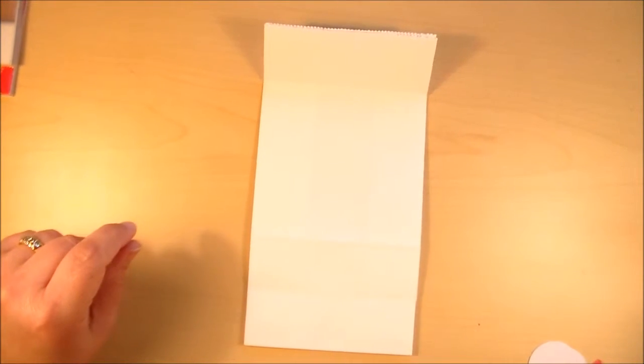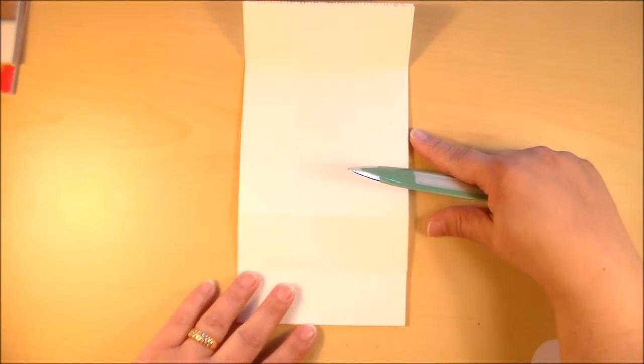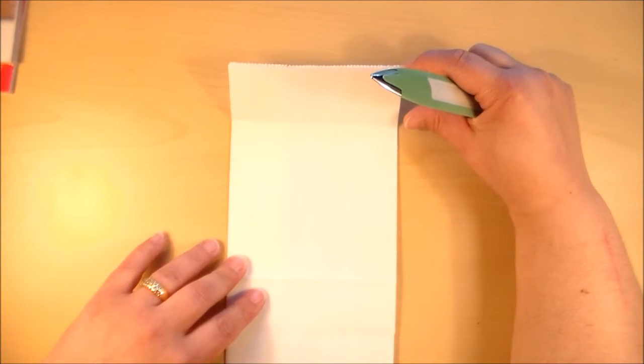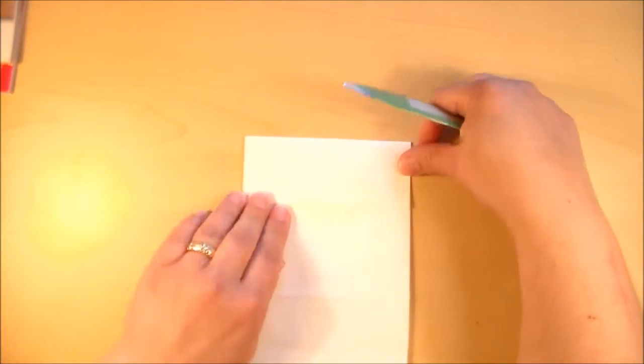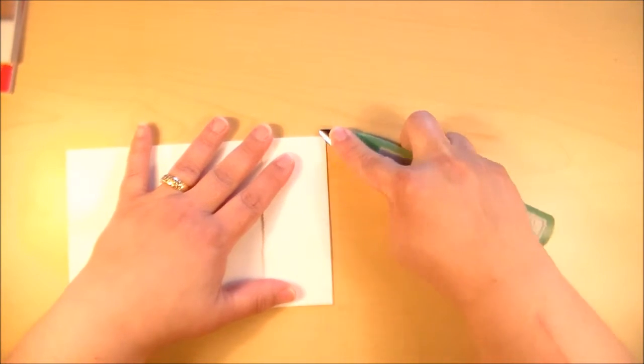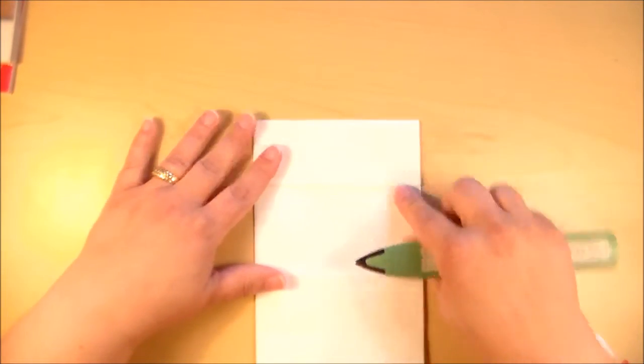To make those cute little favor sacks, I started with just some plain white paper bags that I bought at Hobby Lobby, and they come in all different colors at Hobby Lobby and at other craft stores like Michael's. I started by folding about an inch and three quarters to two inches over, and just took a boning tool and really made that fold nice and sharp because we want it to stay folded over.